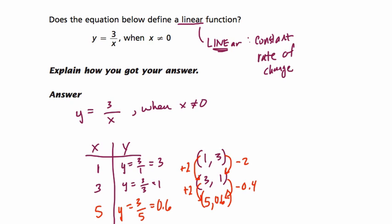So what I would say is that this is not a linear function because it does not have a constant rate of change. First, we decrease by 2, going from 3 to 1, for an increase of 2 here. But then for another increase of 2, from 3 to 5, we decrease by 0.4, which is different, and therefore not a constant rate of change.